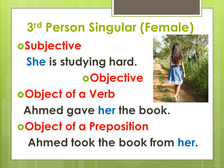Third person singular, female. When it is a subject, the form is 'she': 'She is studying hard.' When it is an object, it changes. As an object of a preposition: 'Ahmed took the book from her.' So 'she' is used as the subject form and 'her' as the object form.